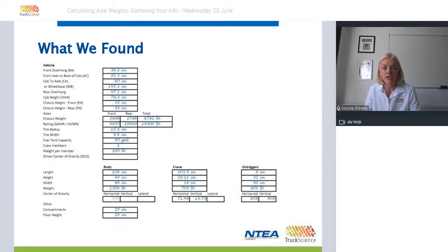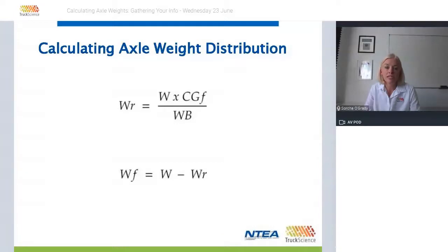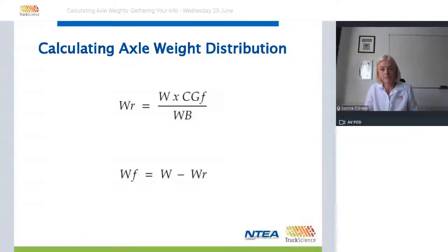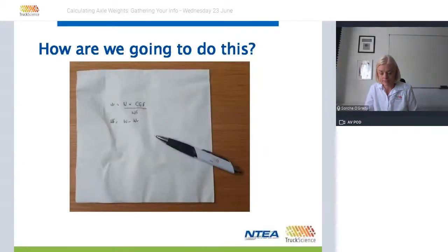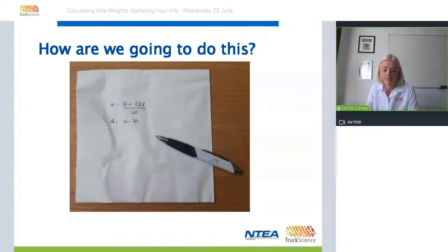The formula used to calculate weight distribution is very simple. To calculate the proportion of a component's weight distributed to the rear — weight on the rear — multiply the total weight by the center of gravity relative to the front axle, and divide by the wheelbase (Wb). The weight on the front axle is then simply total weight minus the weight on the rear. With patience, these calculations can be done on the back of a napkin, and spreadsheets have been used for years to speed things up. Increasingly, more specialized software is being used to calculate weight distribution, center of gravity, and maximum payload.